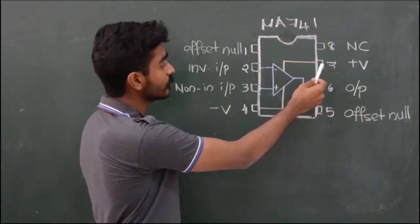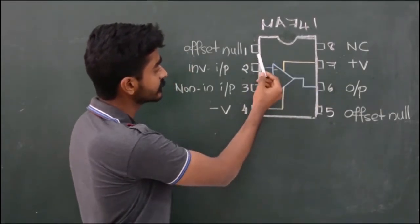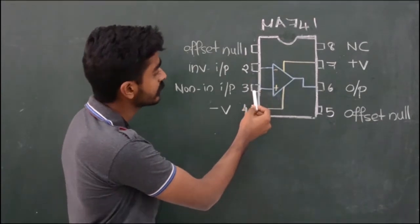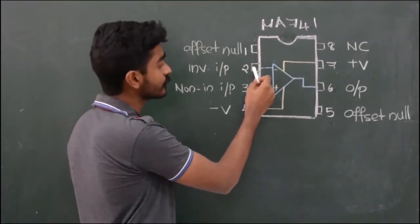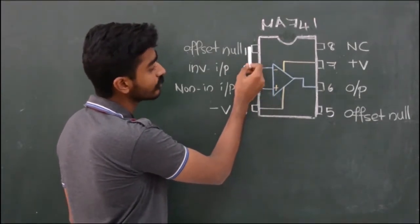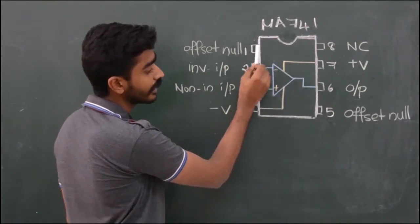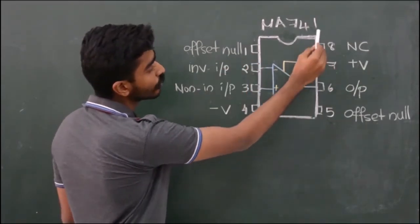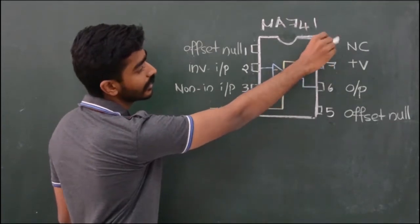When the bias voltages at terminals 7 and 4 are applied, there would be a potential difference between terminals 2 and 3. In order to nullify the effect of this voltage, an external voltage is applied across terminals 1 and 5. There is no connection at terminal 8.